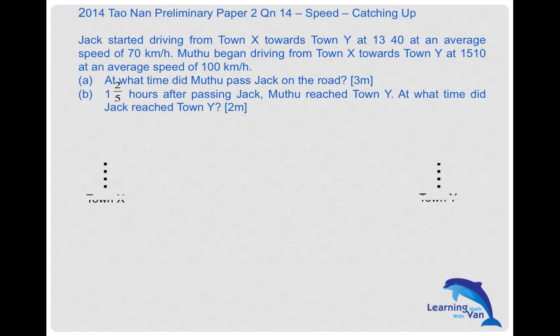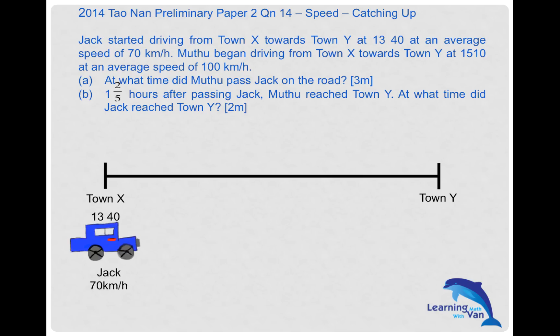To solve this question, always start off by drawing a timeline with the information given — Town X and Town Y, with both starting from Town X towards Town Y. At 1340 Jack started driving at 70 kilometers per hour. You can admire car drawings, but please don't draw anything unnecessarily during exam time. Just write 'Jack' — that will do perfectly fine.